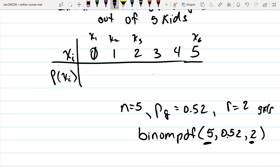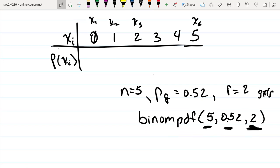Five trials, probability of a success is 0.52, and the probability of having exactly two successes is what binomial pdf will give you.